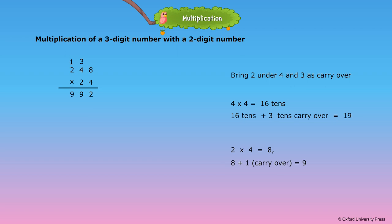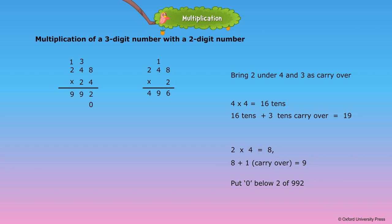Next, we will multiply 248 by 20. Since 24 = 20 + 4, instead of multiplying 248 by 20 directly, we put a zero below the 2 of 992. Now we multiply 248 by 2, not 20, because we have already placed zero under the 2 of 992. Following the same procedure, we write 496 before the zero in the second row, making the second row number 4960. Now we add 992 and 4960. The final answer is 5,952.